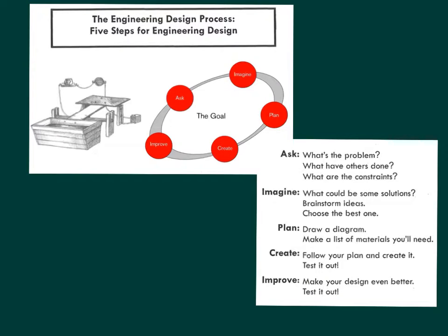The Engineering Design Process has five steps. Ask: What's the problem? What have others done? What are the constraints? Imagine: What could be some solutions? Brainstorm ideas and choose the best one. Plan: draw a diagram and make a list of the materials you'll need.